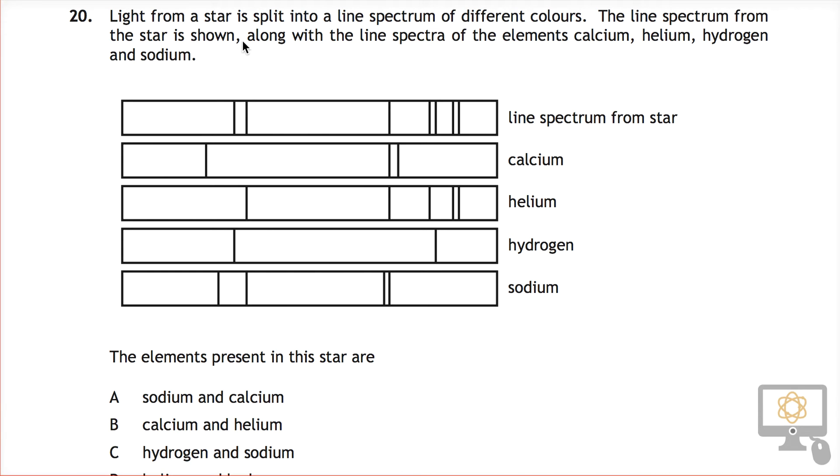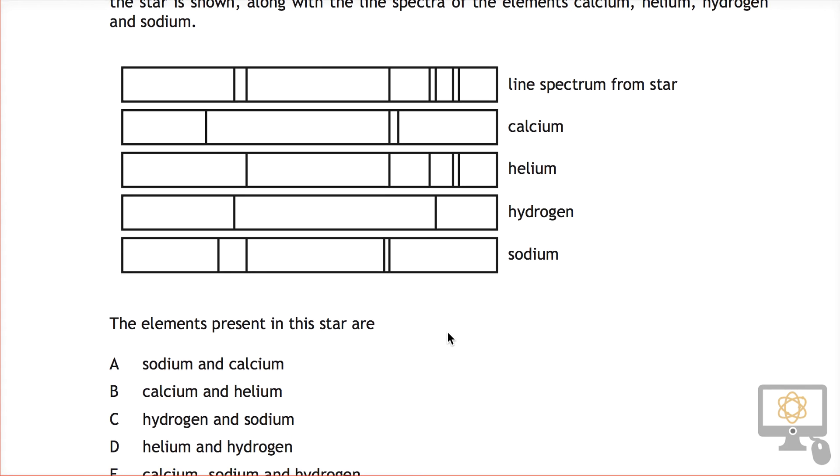The line spectrum from the star is shown along with the line spectra of the elements calcium, helium, hydrogen and sodium. The elements present in this star are, and there are a list of possible options.